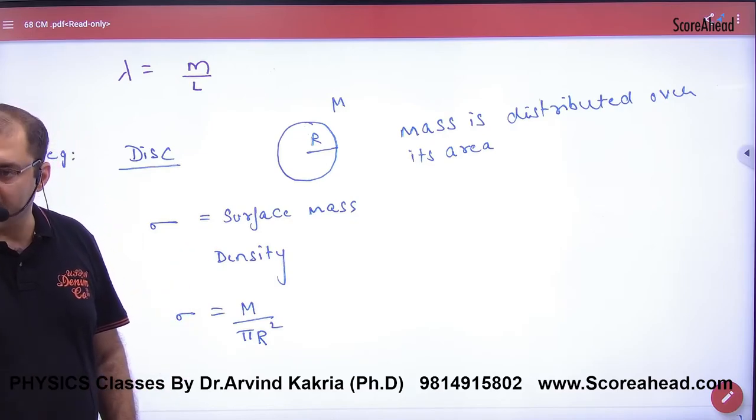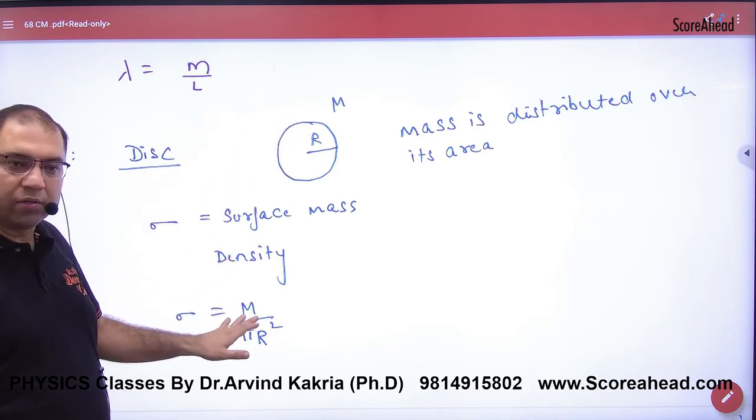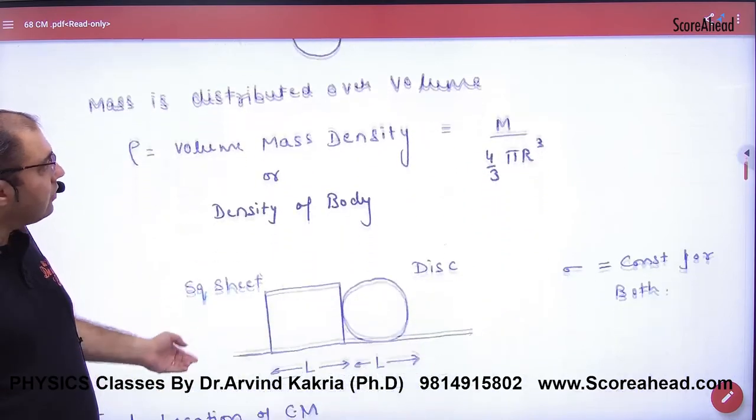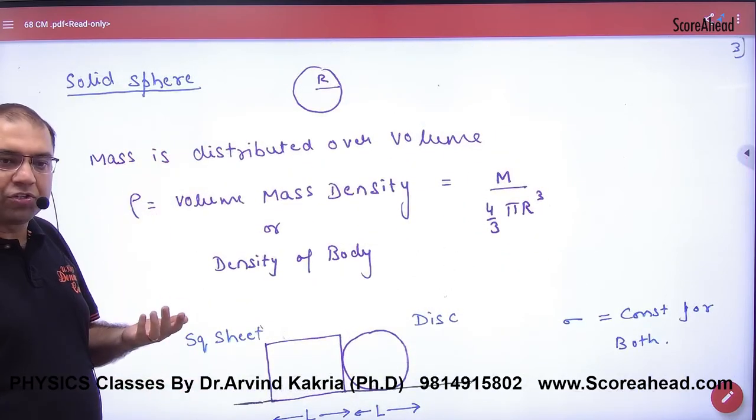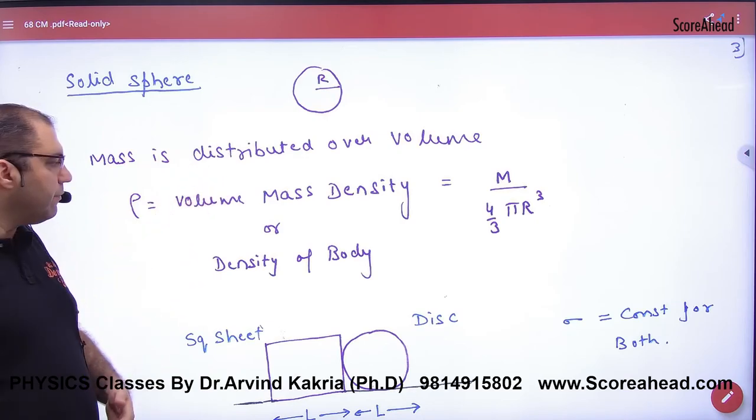Then I have told about area. So Sigma equals mass upon area. If mass distribution is volumewise, this is normal density which will represent...